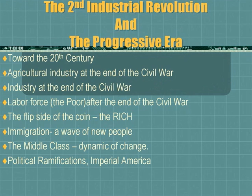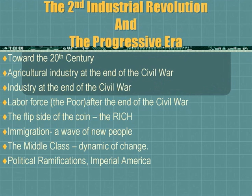We'll start with the agricultural industry at the end of the Civil War — agriculture of the South especially, agriculture in the West, and how industrialization has been affected by the Civil War, with changes in the Second Industrial Revolution around the 1870s–1880s. We'll revisit the labor force, especially the poor in the post-Civil War era. And because of laissez-faire economic policies, there's going to be a huge concentration of wealth in the hands of very few people.